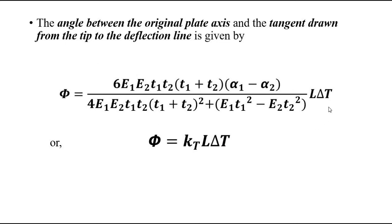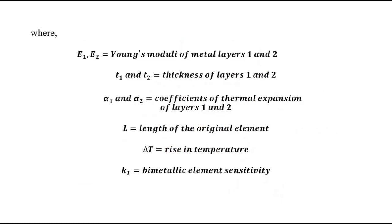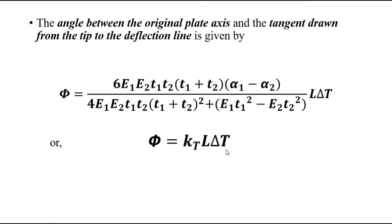This whole complicated expression can be written simply as phi equals kt × L × delta T, where kt is the bimetallic element sensitivity. So the bending angle or curling angle is directly proportional to the temperature change and the original initial length.